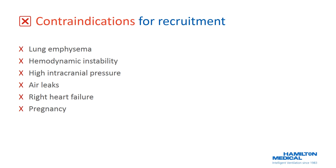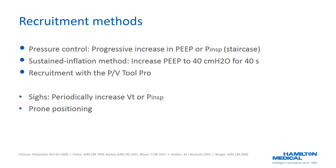Contraindications for recruitment include lung emphysema, hemodynamic instability, high intracranial pressure, air leaks, right heart failure, and pregnancy. There have been several methods described for performing a recruitment maneuver. Sighs are a frequent increase in tidal volume or peak airway pressure, usually for only one breath, to re-aerate collapsed lung areas. However, there is no benefit over time and no tailored PEEP strategy to avoid recurrent collapse. Prone position is proven to be beneficial in ARDS patients to improve oxygenation, with one effect being re-aeration of previously collapsed lung tissue due to a change in gas distribution, fluid, and blood flow coupled with a change in chest wall elastance.